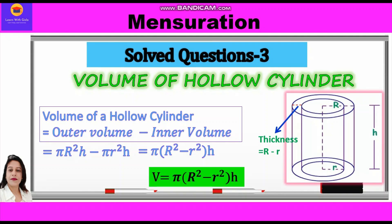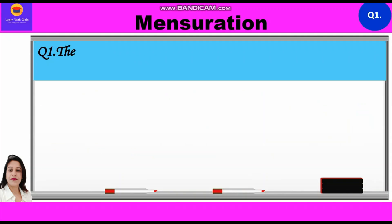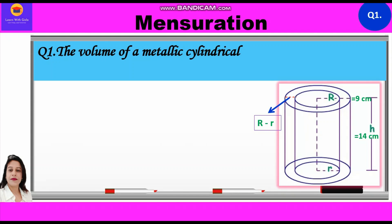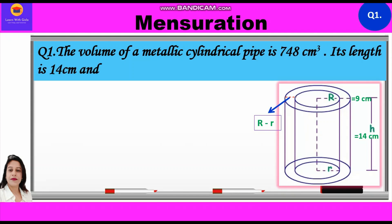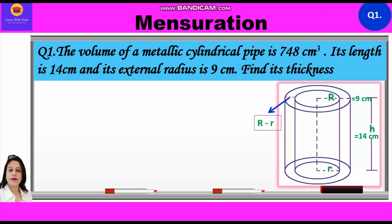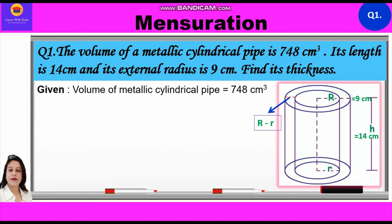Now let's take up the first question. The volume of a metallic cylindrical pipe is 748 cm³. Its length is 14 cm and its external radius is 9 cm. Find its thickness. So given: volume = 748 cm³, height = 14 cm, and outer radius R = 9 cm.